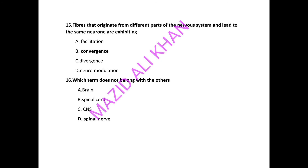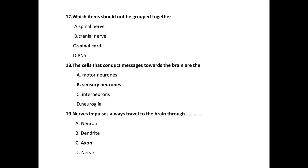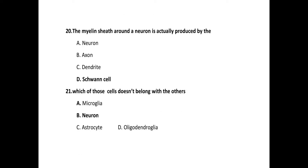Next: which item does not belong with the others? The correct answer is spinal nerve. Next: which item could not be grouped together? The correct answer is spinal cord. The cells that conduct messages towards the brain are the sensory neurons. Nerve impulses always travel to the brain through axons. The myelin sheath around a neuron is actually produced by Schwann cells. Next: which of those cells does not belong with the others? The correct answer is neuron.